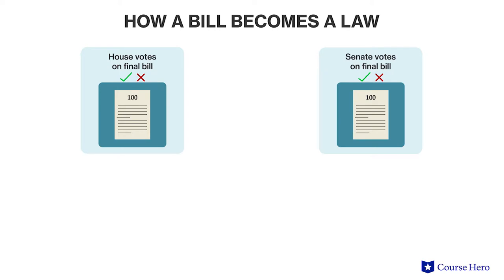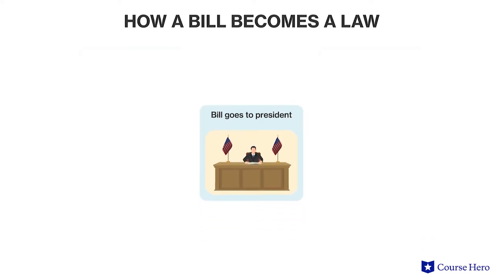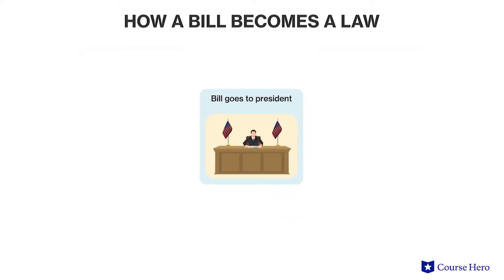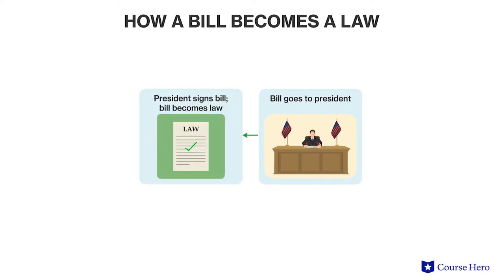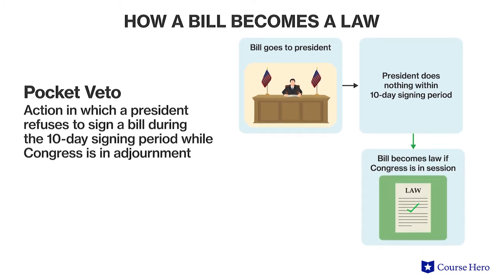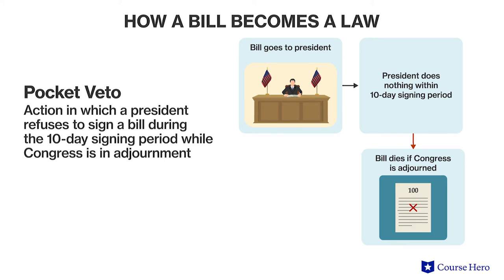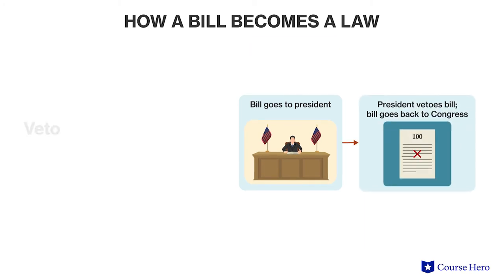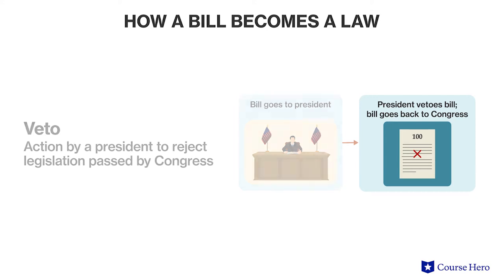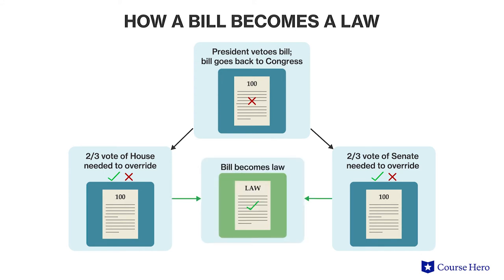Even after both houses of Congress pass a bill, it still must go to the President before it becomes law. When the President gets the bill, one of several things can happen. First, the President may sign the bill, in which case it becomes law. Second, the President may do nothing, in which case the bill becomes law after 10 days unless Congress adjourns within those 10 days, in which case the bill is killed in what is called a pocket veto. Third, the President may veto a bill. If the President vetoes a bill, the bill may still become law if two-thirds of members in both houses vote to override the veto, a high threshold that is difficult for Congress to achieve.